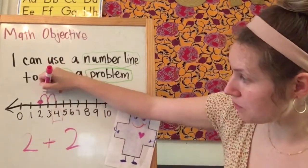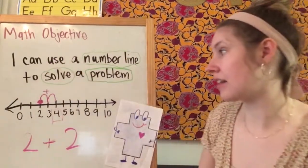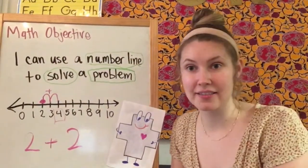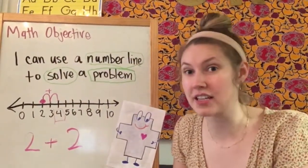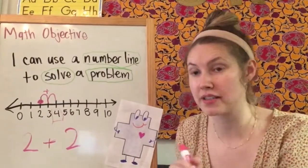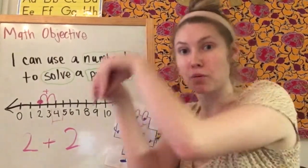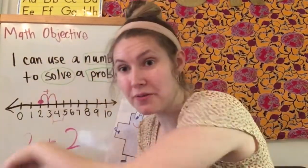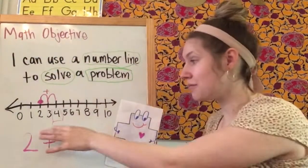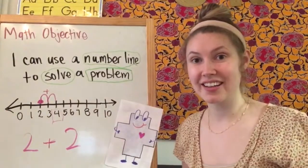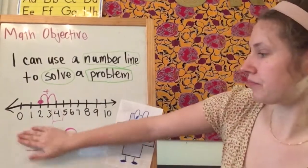These bounces are like the plus sign — they're like Gus the Plus. They show us: I was at two, then I'm going to hop one, two, and I got four. That's how I would show that two plus two is four. Let's do another one so you can see.